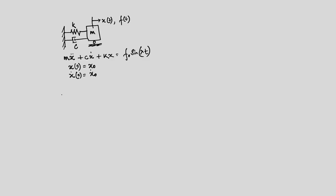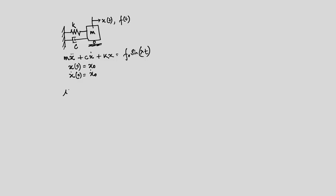If we have a sinusoidal driving frequency, we can find out the response which is again a sinusoid. We can find out the amplitude of that response, and the ratio of that amplitude to the static response is what we call the dynamic amplification. The expression for dynamic amplification is 1 over the square root of (1 minus r²)² plus (2ηr)².